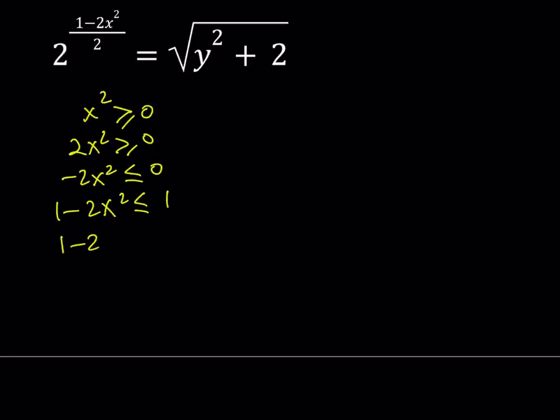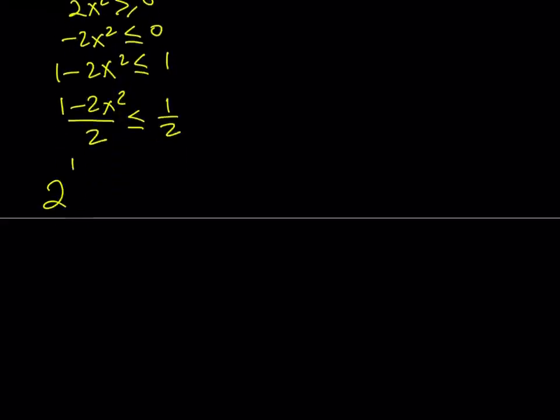Let's go ahead and divide it by 2. And that's going to give us 1 minus 2x squared, the quantity 1 minus 2x squared, divided by 2, is less than or equal to 1 half. Now, we have it as an exponent, so let's do 2 to the power of both sides. This means that 2 to the power of 1 minus 2x squared over 2 is less than or equal to 2 to the power of 1 half. And this is true because 2 is greater than 1, so if you have 2 powers, 1 is greater than or equal to the other 1, then when you raise them, 2 to the power of something, the inequality will be preserved because 2 as a base is greater than 1.